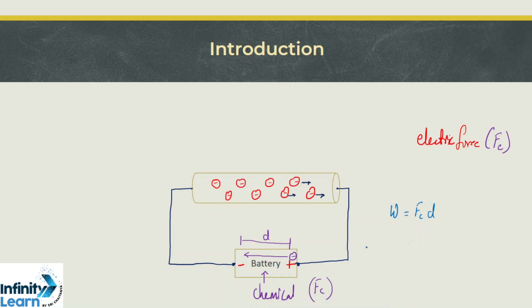Now here is what we are looking for. EMF which is provided by this cell is nothing but work done in moving a unit negative charge, and this will come out to be equal to Fc into D divided by Q, or you can also write it as Fe into D divided by Q, because the minimum amount of chemical force should be equal to the opposing electric force, otherwise moving this negative charge from positive to negative terminal won't be possible.